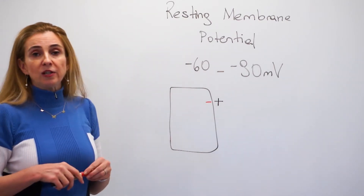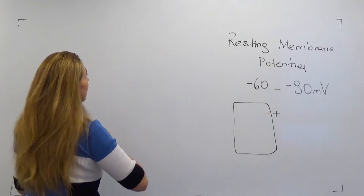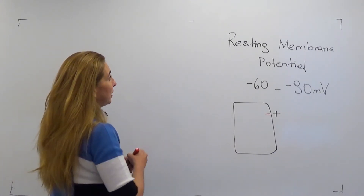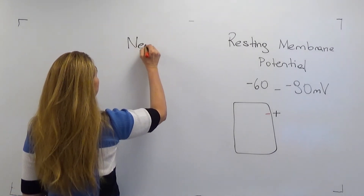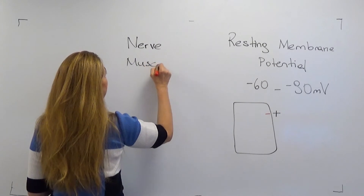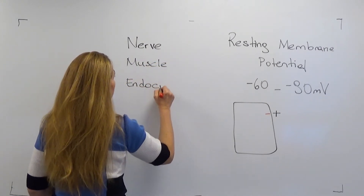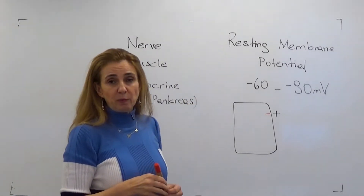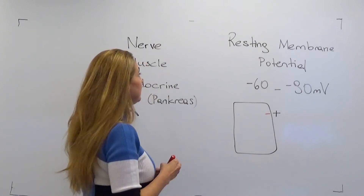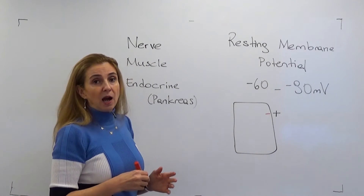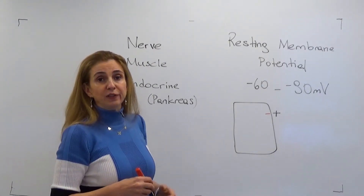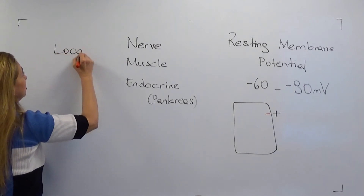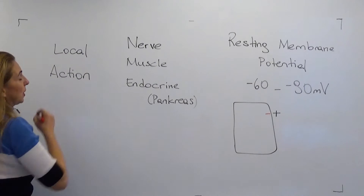The resting membrane potential is present in all cells, but only some cells in the body are able to change their resting membrane potential to produce new membrane potentials. These cells are nerve cells, muscle cells, and some endocrine cells like the cells of the pancreas. The cells that are able to change their resting membrane potential are called excitable cells. Excitable cells are able to produce two different types of potentials: local potentials and action potentials.